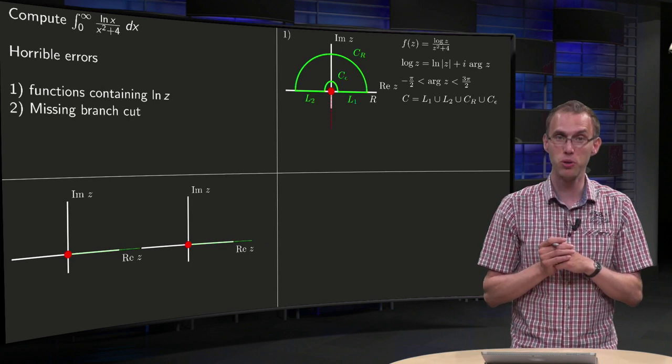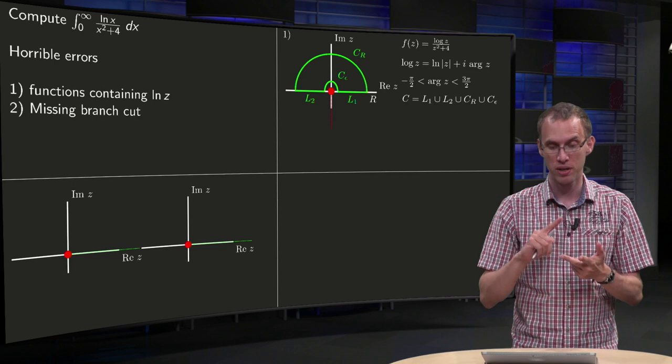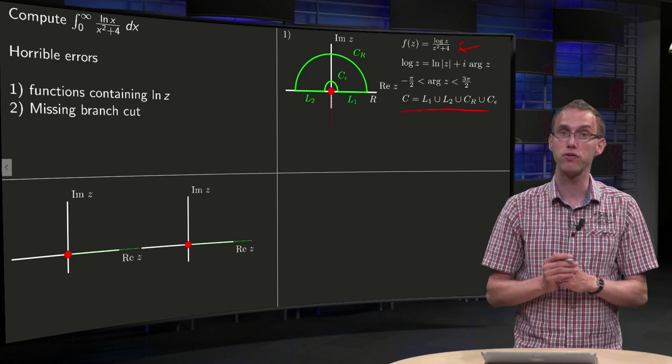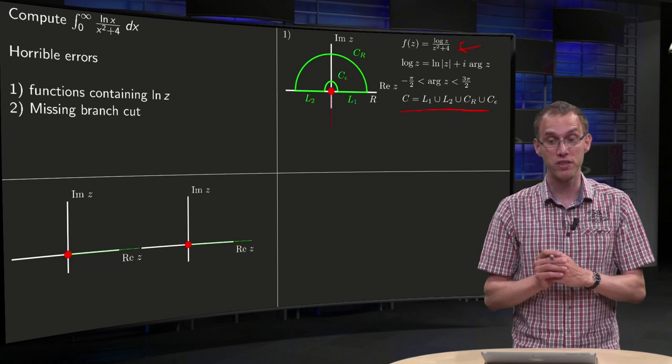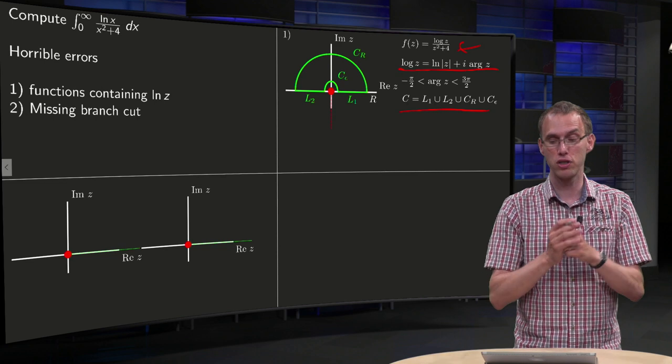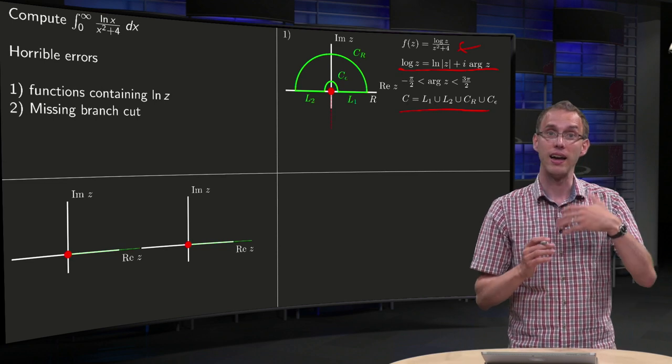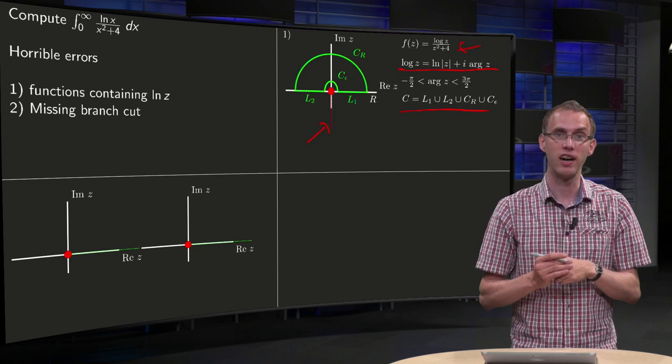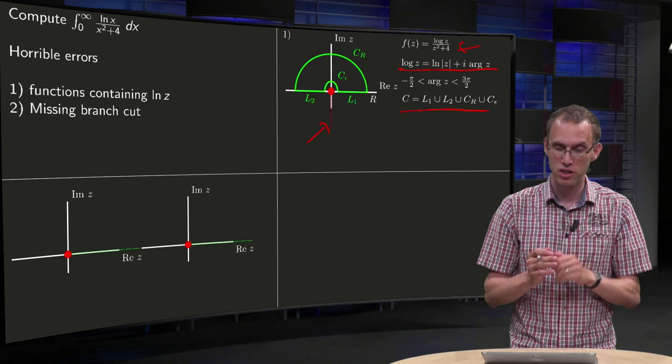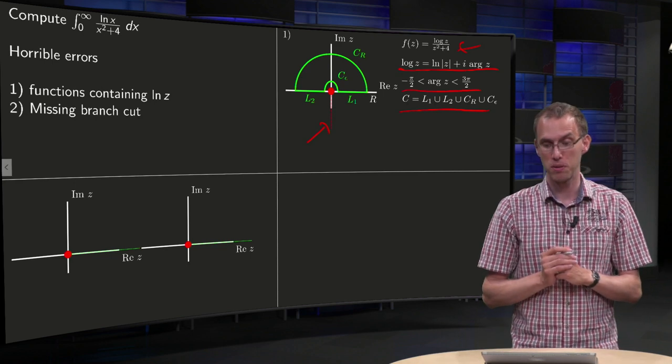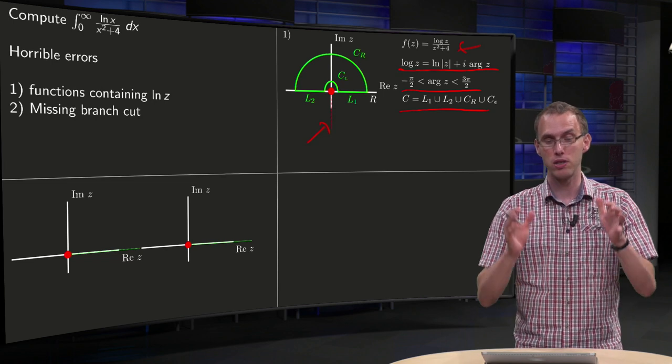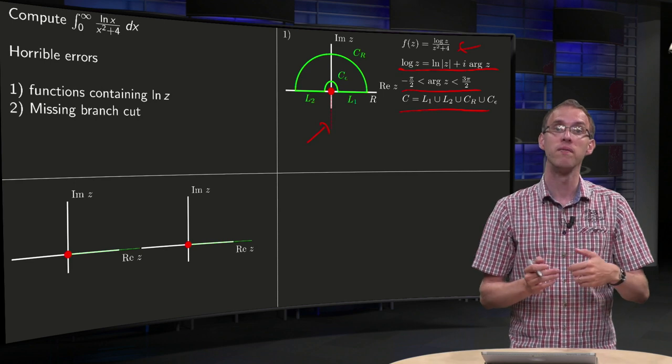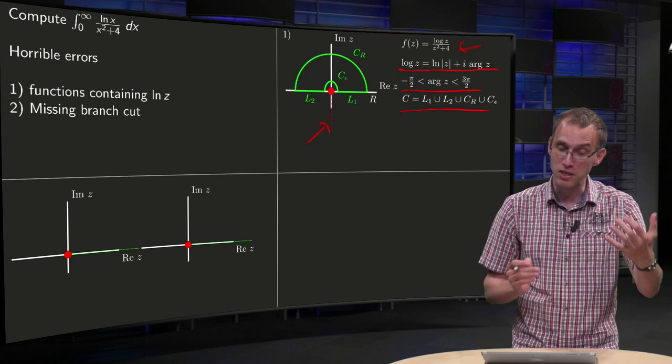So let's try contour c2, consisting of CR, C epsilon, L1 and L2, so that's our total contour. As our function, we take the log of z divided by z squared plus 4. So what do we mean by the log of z here? The log of z equals the ln of the modulus of z plus i times the argument of z. Then we have to specify that, we have to put our branch cut somewhere, and we put the branch cut over here along the negative imaginary axis, so outside of our contour. That's our first step, very important step, where we specify what our function f of z will be, what our contour will be and where we place our branch cut.